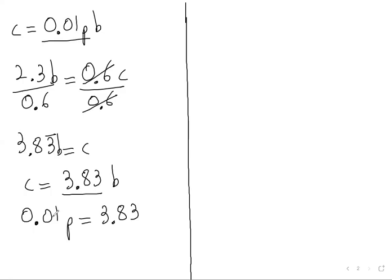To get rid of 0.01, we multiply by 100. We want only the P value, so we multiply both sides by 100. 0.01 times 100 equals 1P, and 3.83 times 100 equals 383.